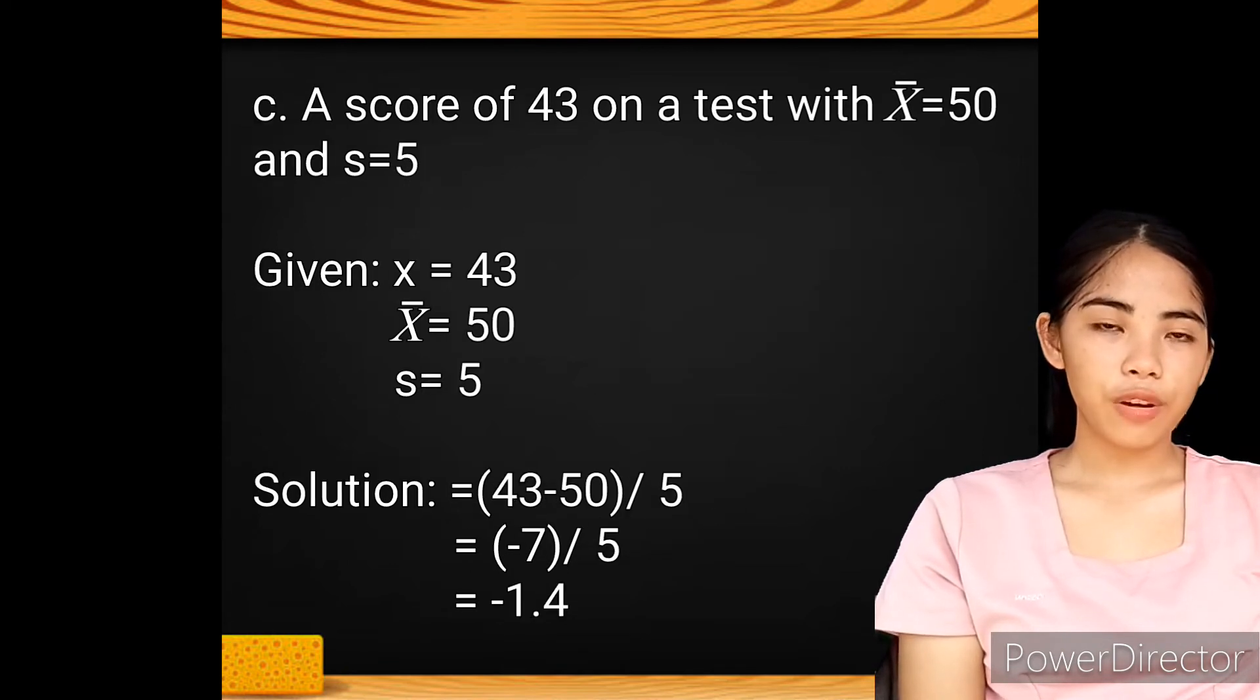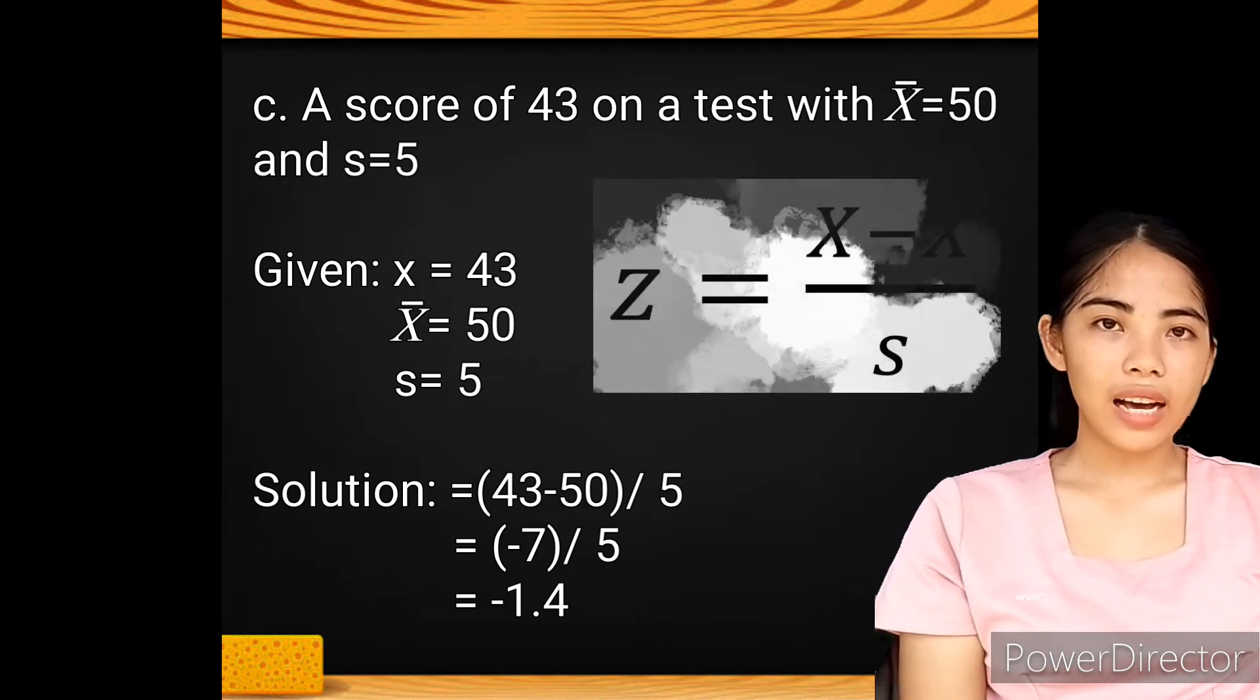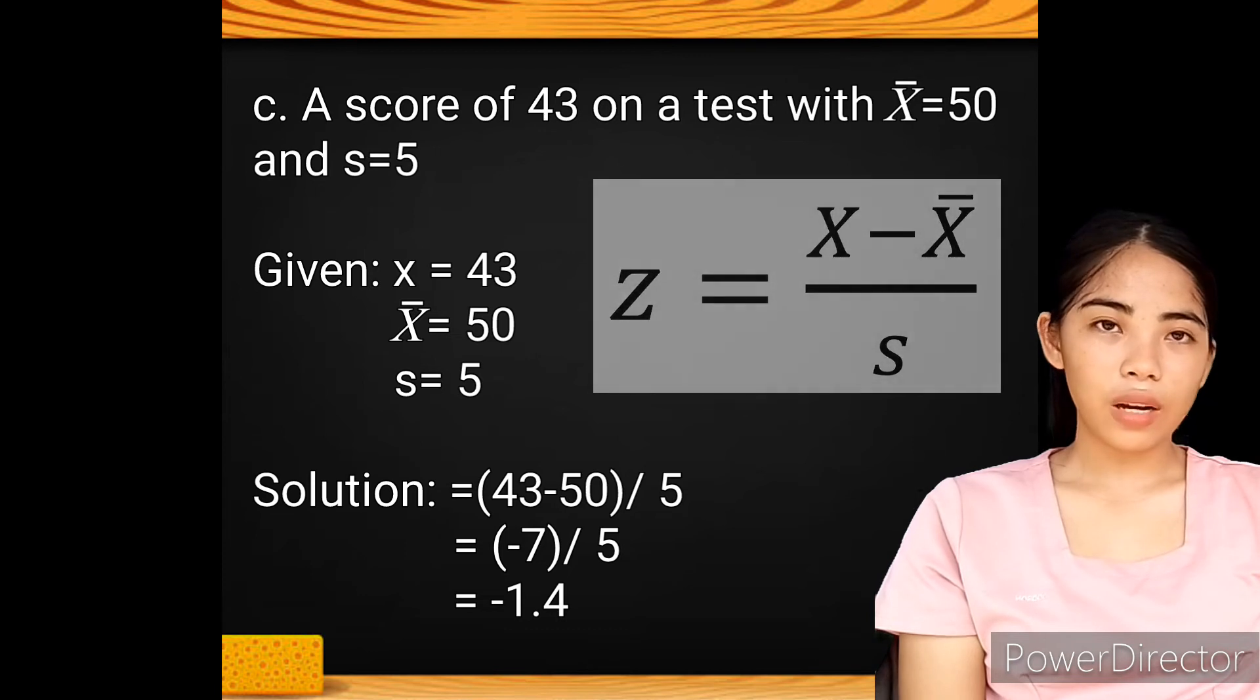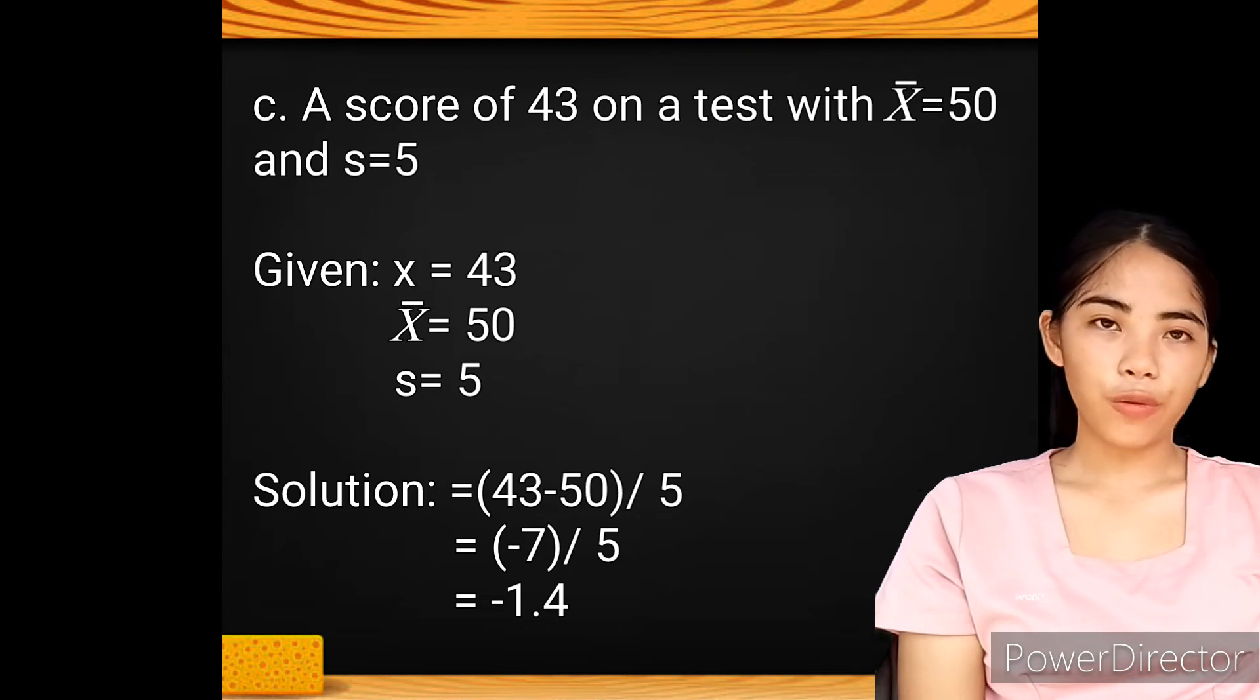For test C, the values are 43, 50, and 5. Again, substitute all the values so we have 43 minus 50 divided by 5. 43 minus 50 equals negative 7. Negative 7 divided by 5 equals negative 1.4.